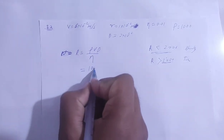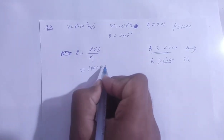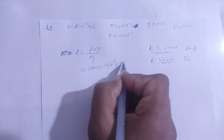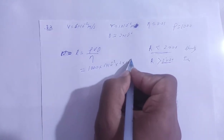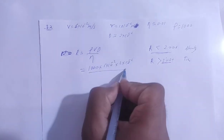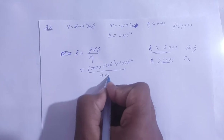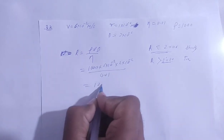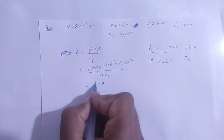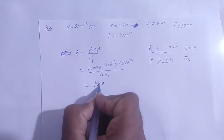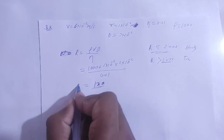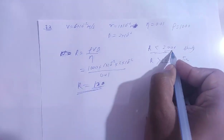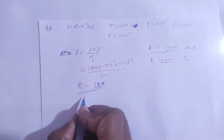The density of water is 1000, the velocity is 6 into 10 to the power minus 2, the diameter is 2 into 10 to the power minus 2, and eta is 0.01. This gives a result of 120. The Reynolds number is 120 — a dimensionless constant.